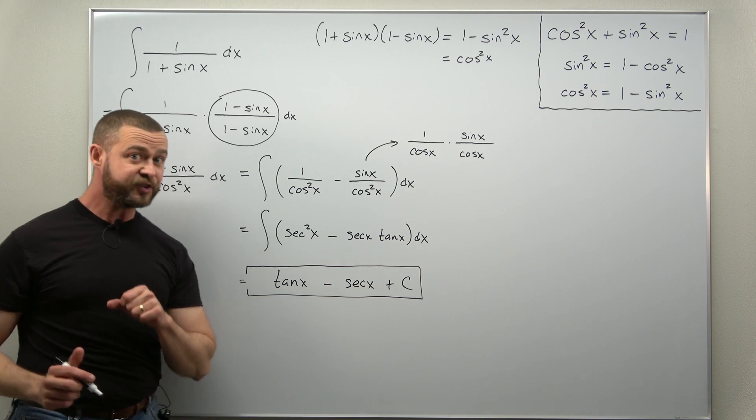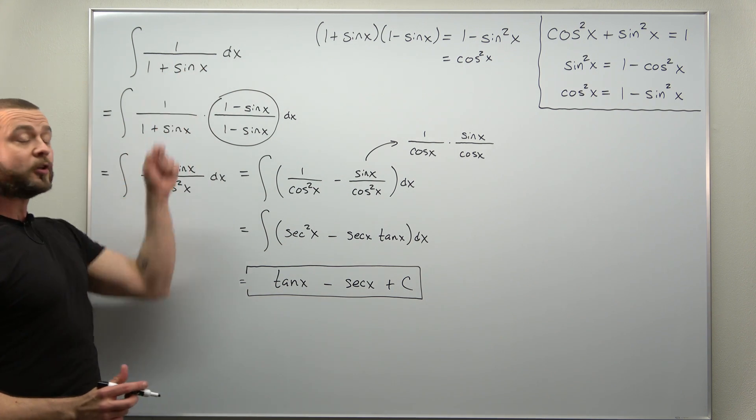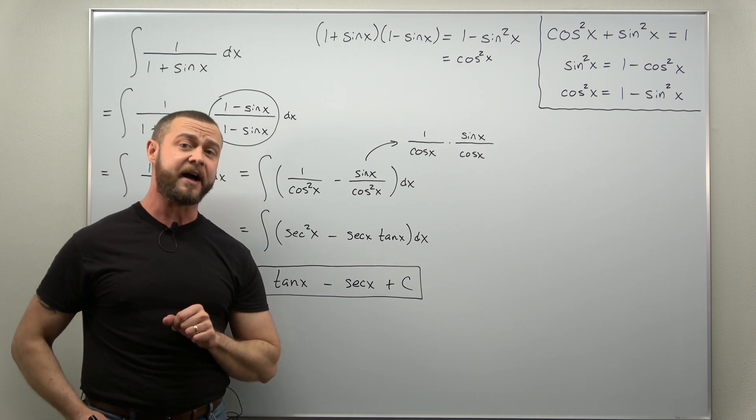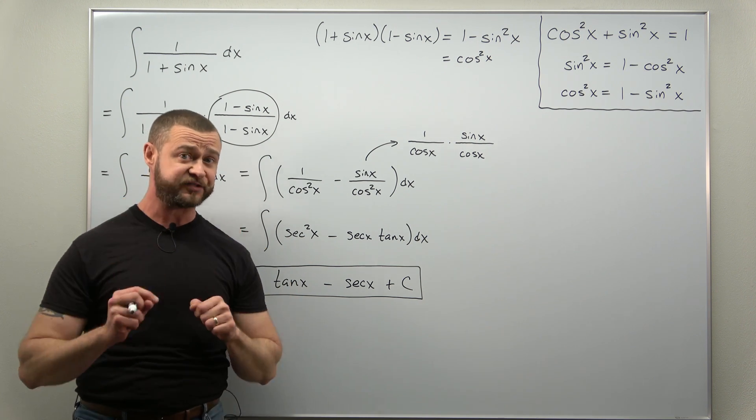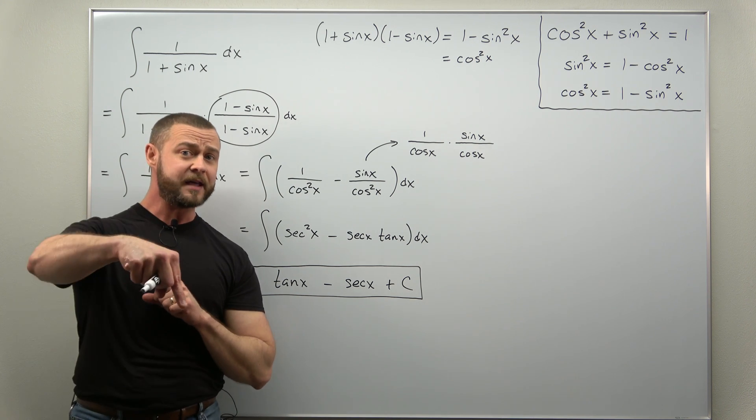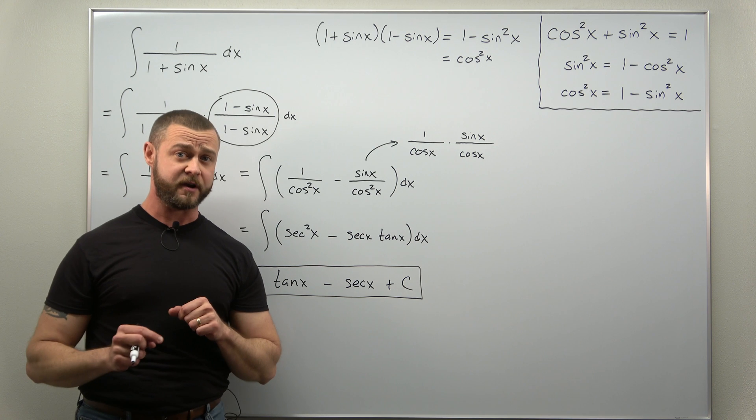Now there's another way to solve this integral. Our integral here involves a rational function containing sine of x and cosine of x. That other method is called Weierstrass substitution, but it's a lot more complicated. We're going to have that link down below in the description to a future video on that.